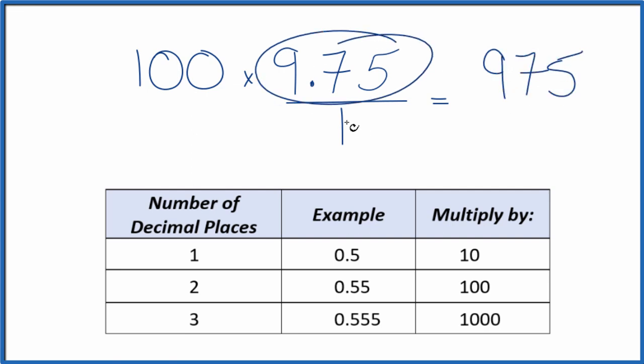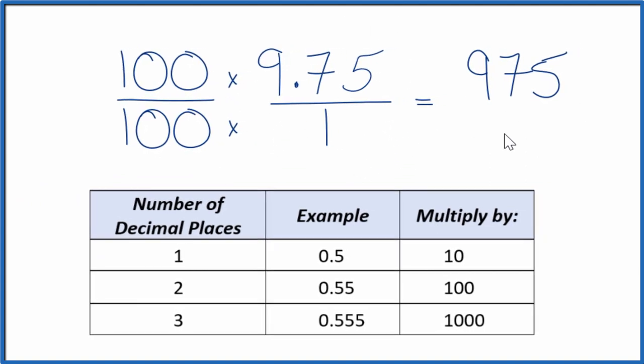But we can't just multiply the numerator by 100. We also need to multiply the denominator by 100. That's because 100 divided by 100 is 1, so we're just multiplying by 1. We don't change the value, just the way it's represented.